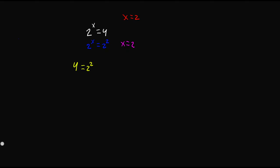We have 2 as our base and our exponent is x. In order to make the equation satisfied we have to copy the exact same thing on the right side onto the left side. So if we put x equal to 2, we get 2 squared is equal to 2 squared, which is indeed true.